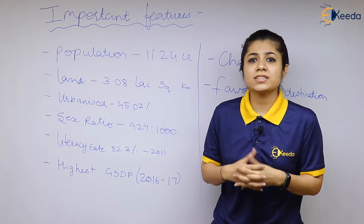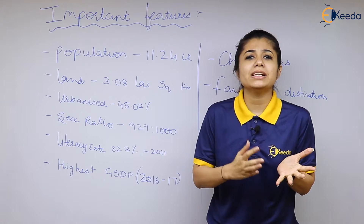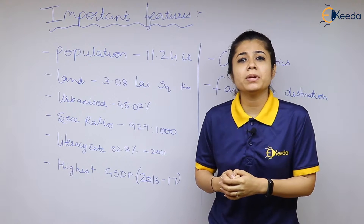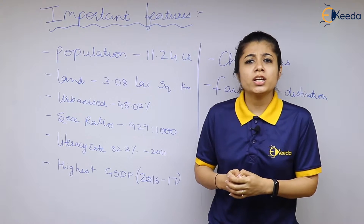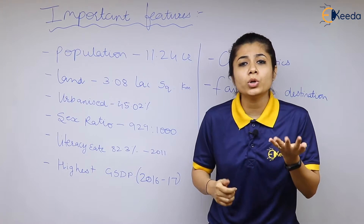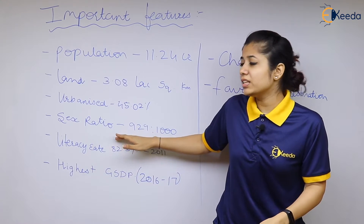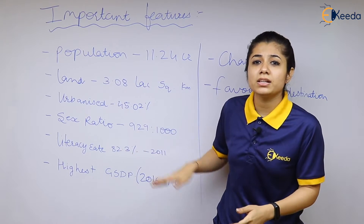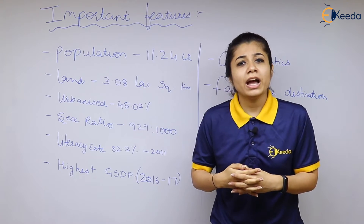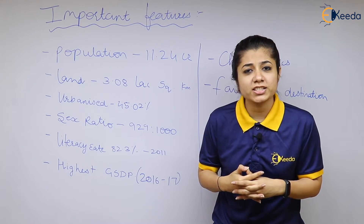The next factor we consider is the sex ratio, which means the number of females per every 1,000 males. In India, the number of females is considerably low. It is only in Kerala that the number of females is more than the number of males. In Maharashtra, the sex ratio is 929 females per 1,000 males, which is considerably low, and a lot of efforts are being taken by the state government to increase this number.